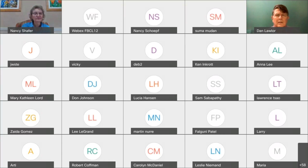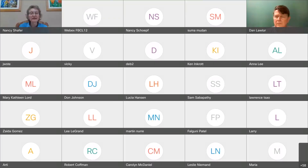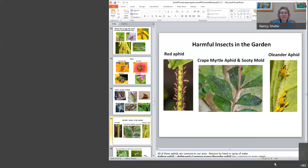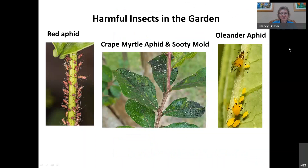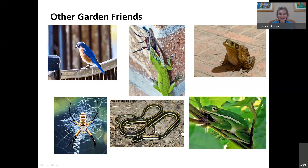A viewer asked about leaf-footed stink bugs wreaking havoc on vegetables. Leaf-footed bugs lay long strings of eggs on house walls before they hatch; destroy the eggs or nymphs when they're grouped together. A pesticide like spinosad may work, but a specific parasitic insect isn't immediately known — checking the hotline for more information is recommended.